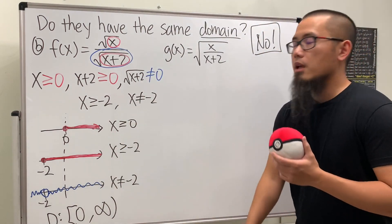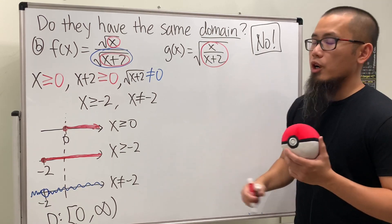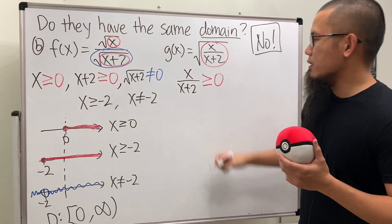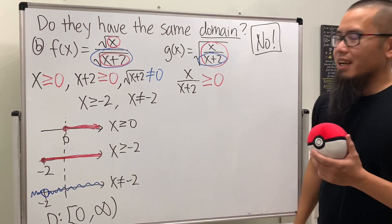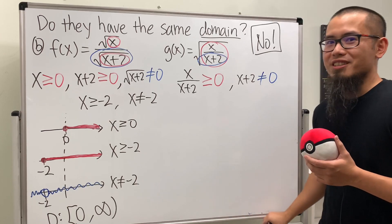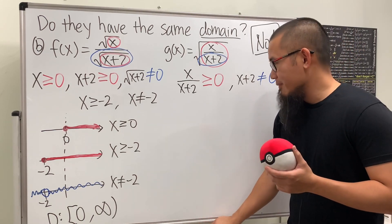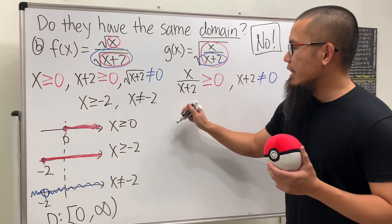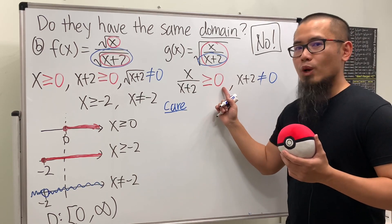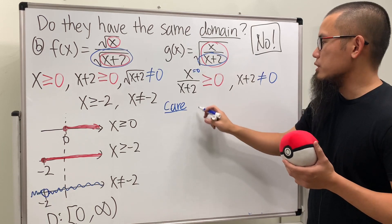For g of x, we have only one square root, so we need x over x plus 2 to be greater than or equal to zero. We also need x plus 2 not equal to zero. This is a rational inequality. The safe way: find the numbers we care about — set the numerator equal to zero to get x equals zero, set the denominator equal to zero to get x equals negative two.